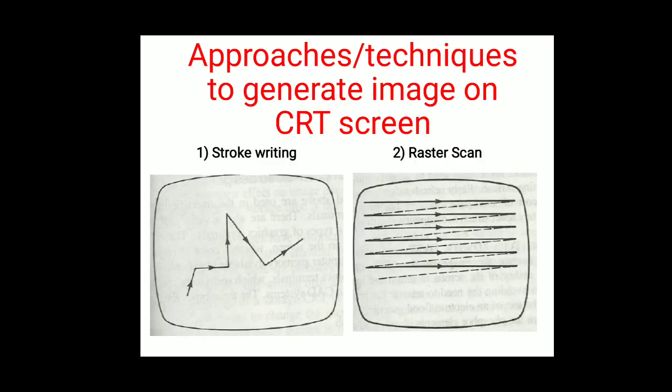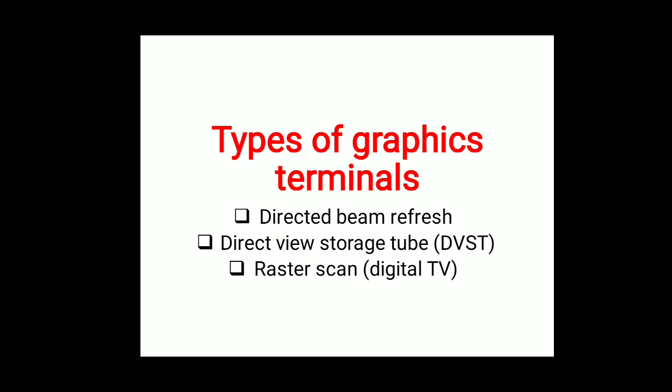There are two approaches to generate an image on the CRT screen: first is stroke writing, and second is raster scan. In stroke writing, the beam follows a zigzag path, while in raster scan it follows a straight-line plan in a systematic manner to create the image.